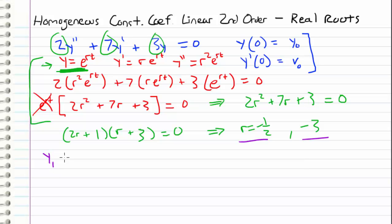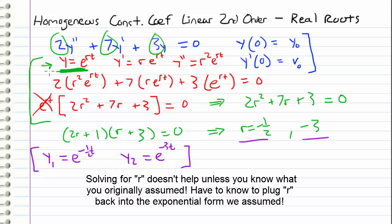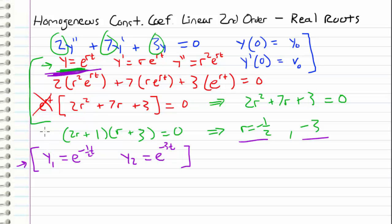So we have one solution y₁, which is e to the negative 1/2 times t, and a second solution y₂, which is e to the negative 3 times t. These solutions come directly from our assumption that y equals e^(rt) whenever we solve the characteristic equation. That's why it's important to remember where the characteristic equation comes from — because this is where our solutions come from.